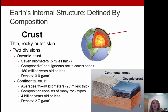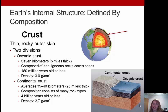Moving on, let's talk about Earth's internal structure. We have a layered Earth system that can be divided two ways. Starting with composition — first, the crust: a thin, rocky outer skin subdivided into oceanic and continental crust. Oceanic crust is typical of oceans, roughly 5 to 7 kilometers thick, composed of a dark igneous rock called basalt. It ranges from modern day up to 180 million years old, with a density of about 3 grams per cubic centimeter — the denser of the two crust types.